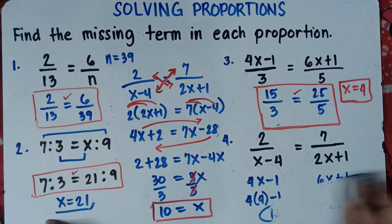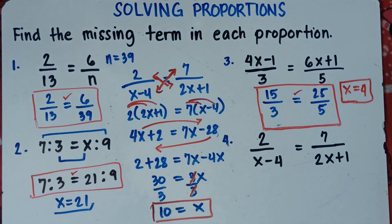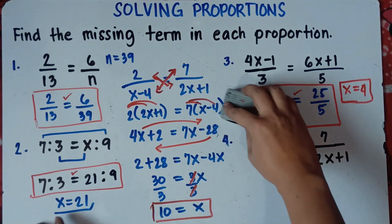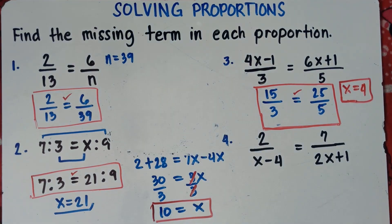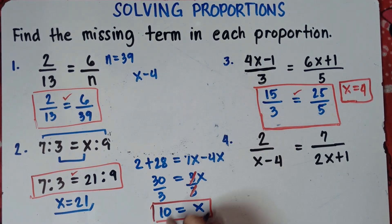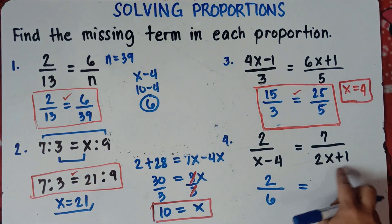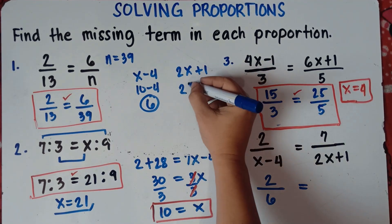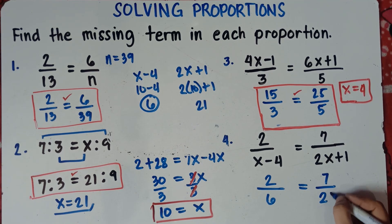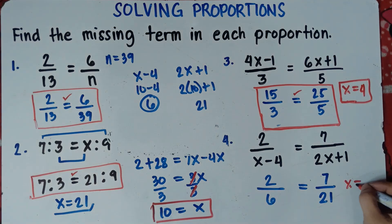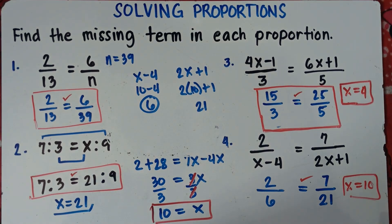If the teacher asks for the complete proportion, substitute x equals 10. For x minus 4: 10 minus 4 is 6, so the left ratio is 2 over 6. For 2x plus 1: 2 times 10 is 20, plus 1 is 21, so the right ratio is 7 over 21. Cross-check: 2 times 21 is 42, and 7 times 6 is 42. Our answer is correct — x is 10.